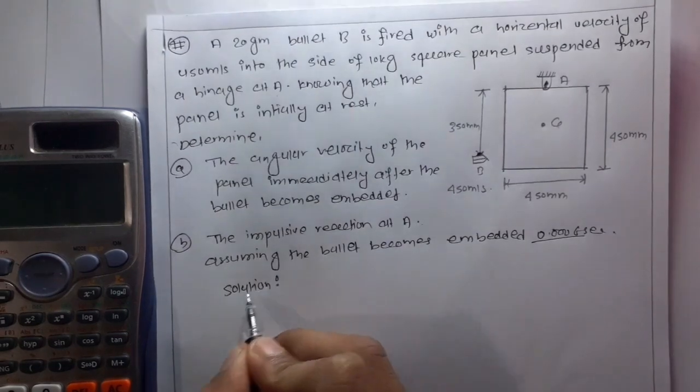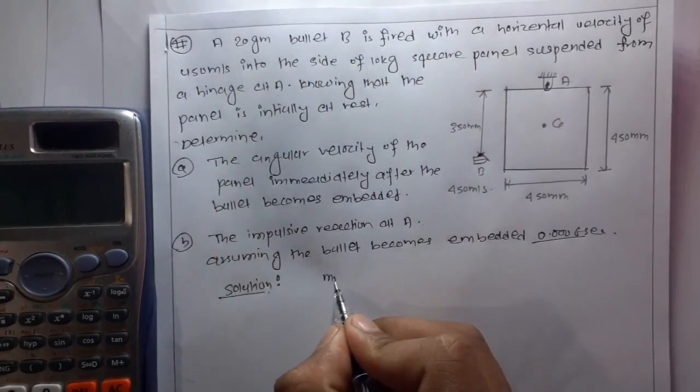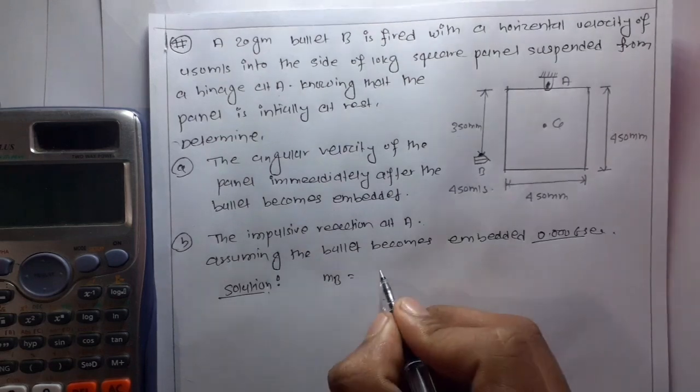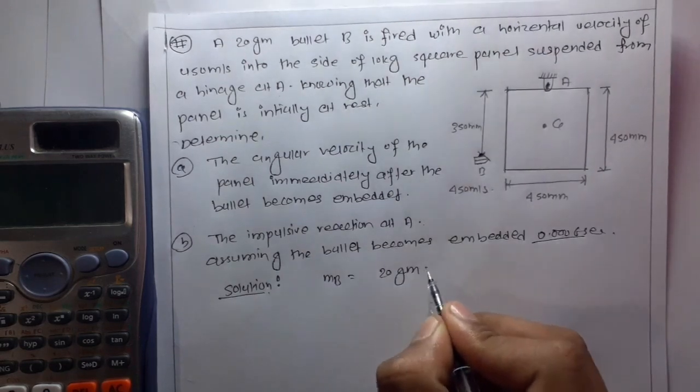So, for the solution, first the given values: mass of bullet mb is 20 grams, so that is 0.02 kg.